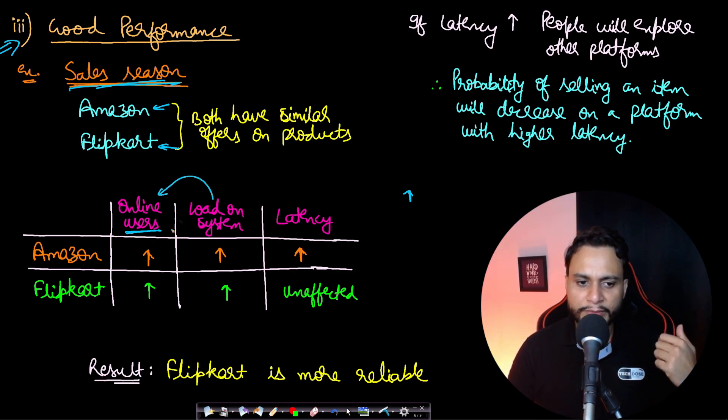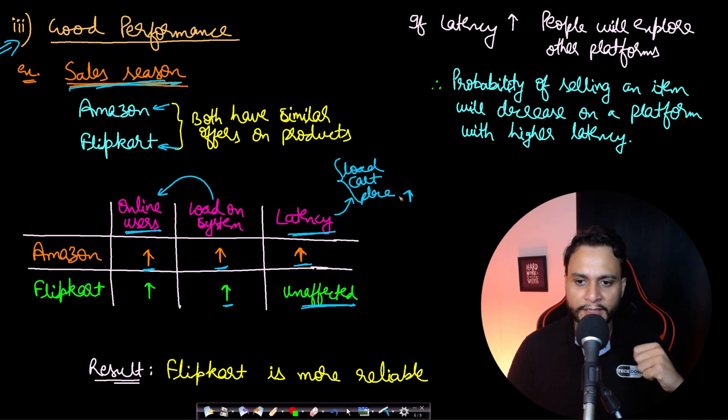Definitely the load on the system will be directly proportional to the online users on your platform. So the more number of users on your platform, the more load on the system. The load is increasing for both Amazon and Flipkart. Now the latency—let's assume that the latency is increasing for Amazon and for Flipkart it is unaffected. Due to some backend issues, the latency is increasing for Amazon. By latency, I mean the time taken to load a page, add your item to the cart, place an order, and so on. Let's say previously it was taking one second to do any of these operations, and now it is taking 10 seconds due to the latency. But for Flipkart it is still one second.